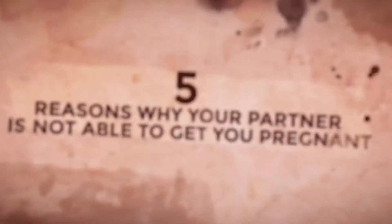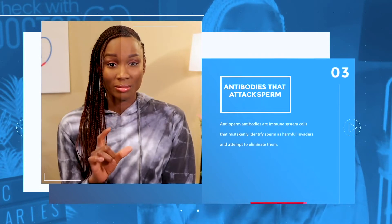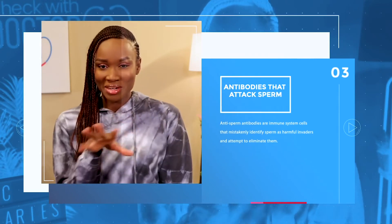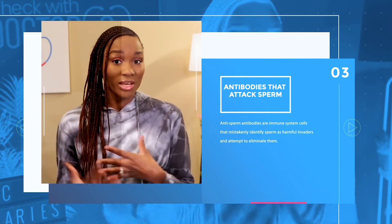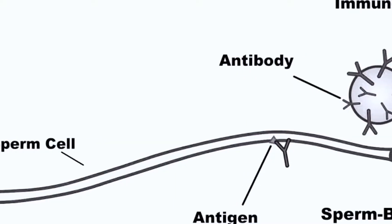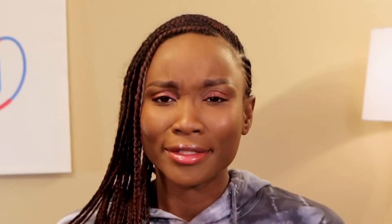Another thing that might be preventing you from getting your partner pregnant is something called anti-sperm antibodies. When your body is exposed to infections or microorganisms — viruses, bacteria, fungi, parasites — your immune system kicks into play and produces antibodies to fight these infections.